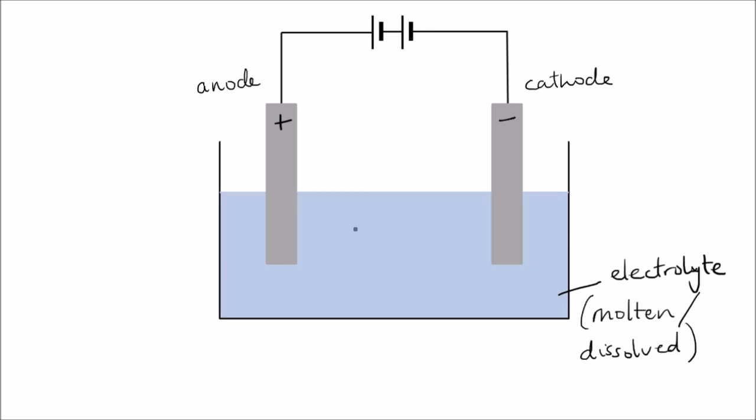In this electrolyte you have positive ions and negative ions. The ions move to an electrode. Positively charged ions move to the cathode, and negatively charged ions move to the anode.